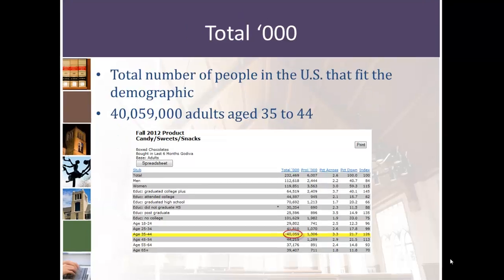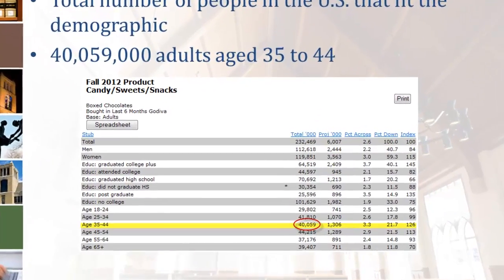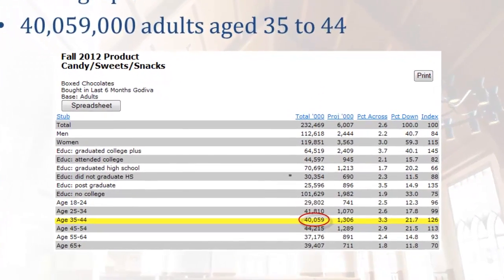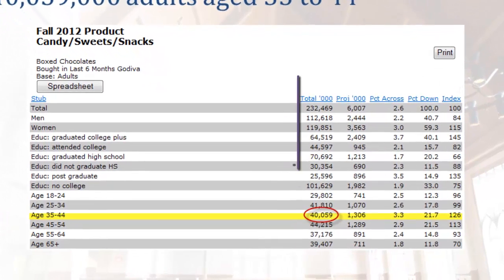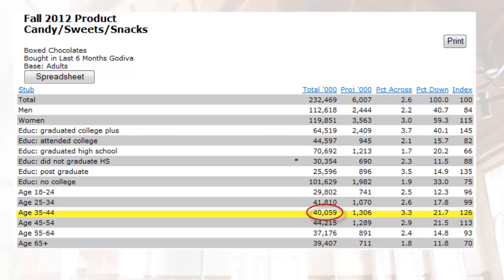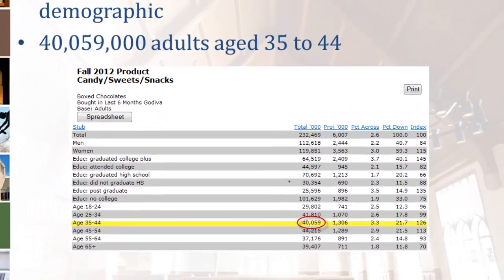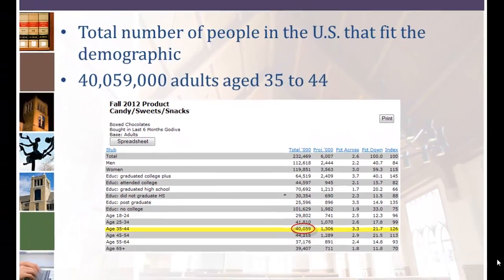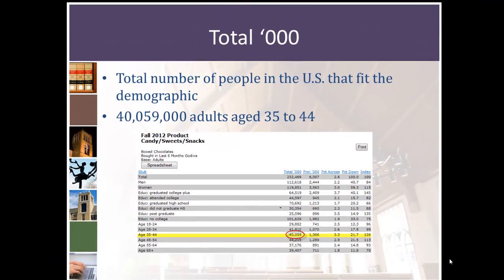The first column, Total Thousand, means the total estimated number of people in the United States that fit that demographic, not just people that purchased chocolate. That number is expressed in thousands, so MRI estimates that there are 40,059,000 adults aged 35 to 44 in the US.